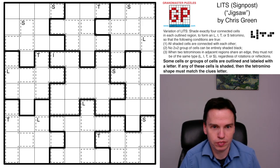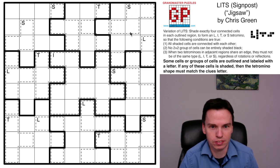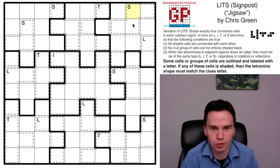We're here to solve this LITS signpost variation by Chris Green called Jigsaw. The signpost variation is given in the rules above, stating that if I have a cell in one of these groups that gets used, I always must form that tetromino shape. So if one cell is an S, it's part of a big overall S.